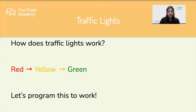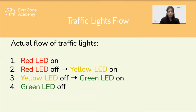So how does a traffic light actually work? First it will light up the red light, followed by the yellow light, and finally the green light. When we are coding, the flow would be: first we turn on the red LED; next we switch off the red LED and turn on the yellow LED; then we switch off the yellow LED and turn on the green LED; and finally the green LED switches off and the red LED turns on again to repeat the cycle.